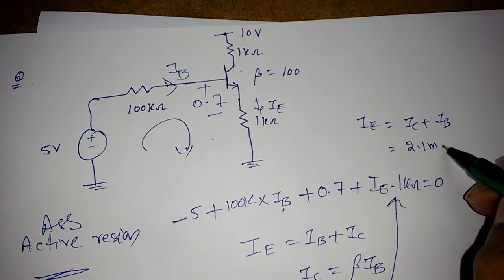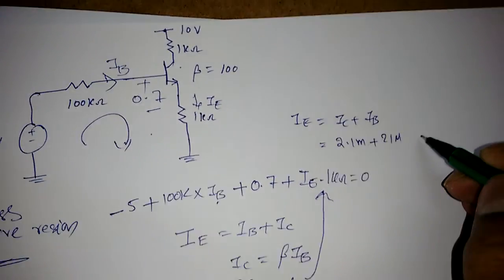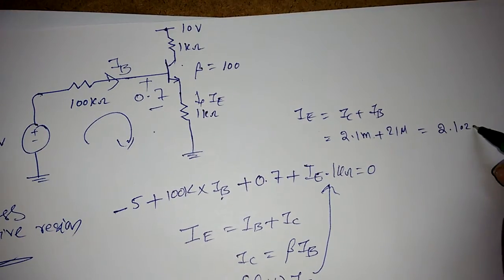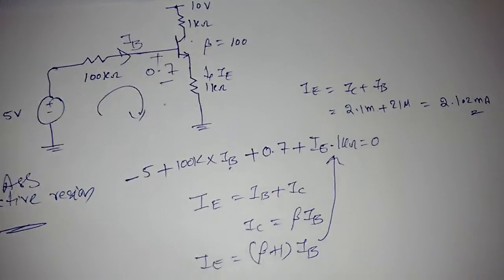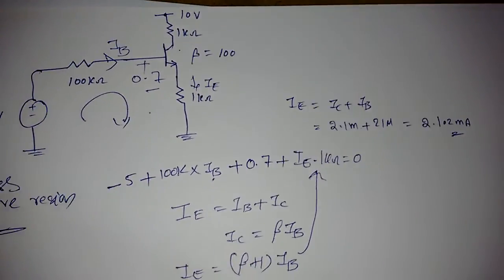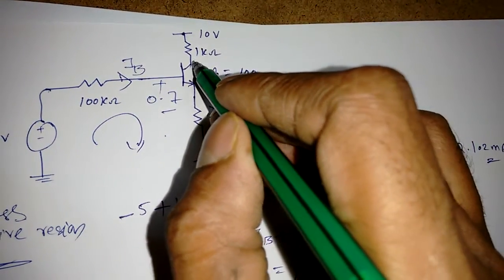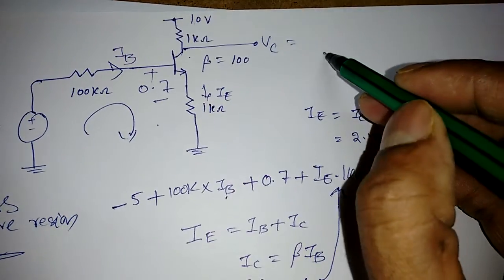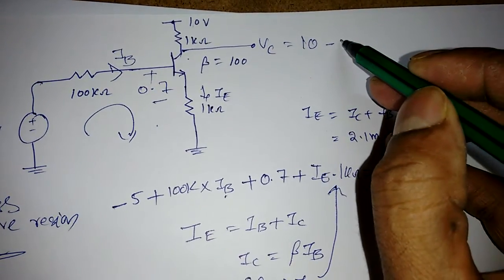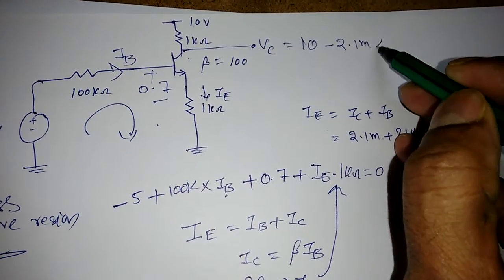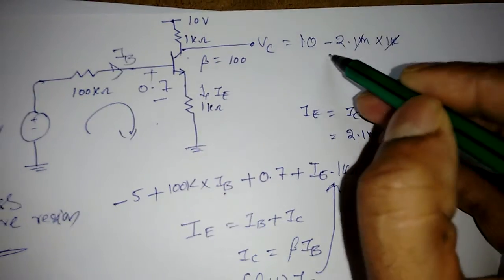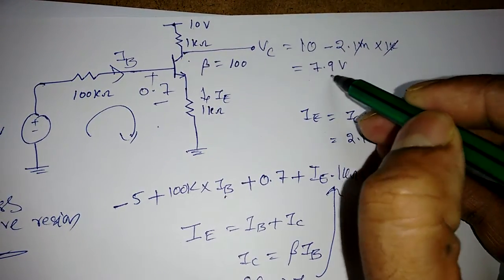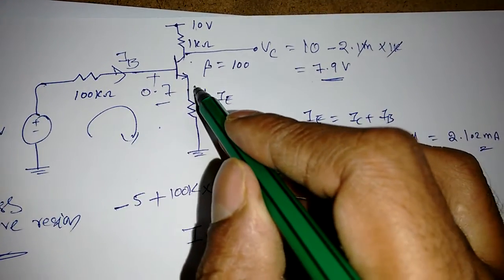I can find IE: IE = IC + IB = 2.1 mA + 21 µA, which is approximately 2.102 mA. So approximately we can take IC and IE as equal.